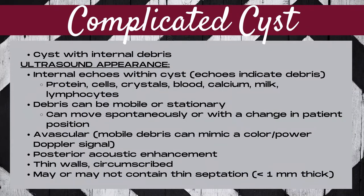The next category of cysts on a breast ultrasound is known as a complicated cyst. A complicated cyst is a cyst with some type of internal debris, whether it be proteinaceous debris, cells, crystals, blood, calcium, milk, lymphocytes, or some type of internal septation.